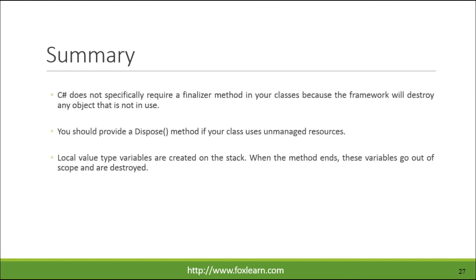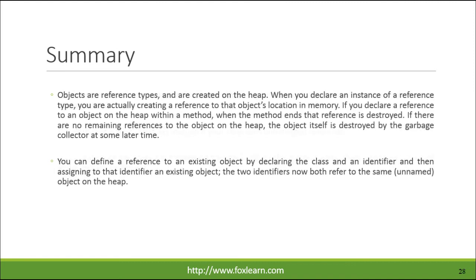C# does not specifically require a finalizer method in your classes because the framework will destroy any object that is not in use. You should provide a dispose method if your class uses unmanaged resources. Local value type variables are created on the stack. When the method ends, these variables go out of scope and are destroyed. Objects are reference types and are created on the heap. When you declare an instance of a reference type, you are actually creating a reference to that object's location in memory. If you declare a reference to an object on the heap within a method, when the method ends that reference is destroyed. If there are no remaining references to the object on the heap, the object itself is destroyed by the garbage collector at some later time.